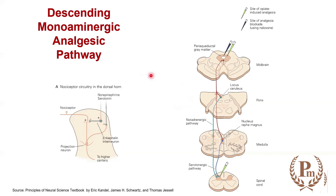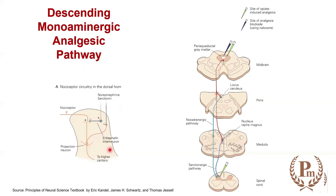The answer is that there is an endogenous — inside our body — descending monoaminergic analgesic pathway. The neurotransmitters released here are serotonin and noradrenaline, which are monoamines. We call it 'descending' because it comes from the higher center down to the spinal cord, and 'monoaminergic' because it involves monoamine neurotransmitters. Hence, it is called the descending monoaminergic analgesic pathway.